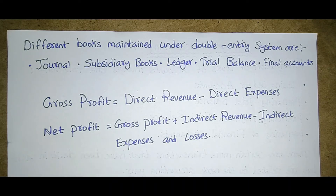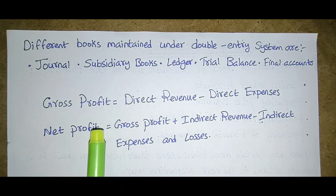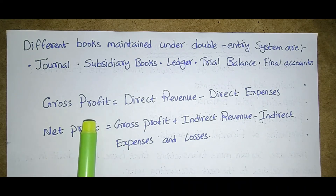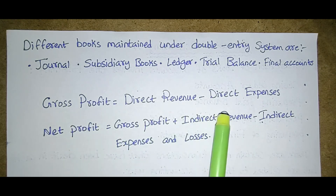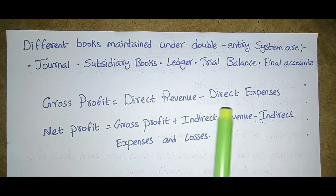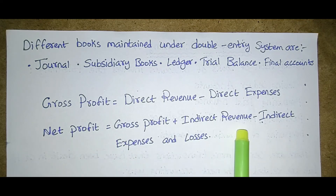Now we will discuss the most important aspect of financial accounting: gross profit and net profit. For every problem related to profit and loss account or trading account, we must know these terms. Gross profit is direct revenue minus direct expenses. Net profit is gross profit plus indirect revenue minus indirect expenses and losses.